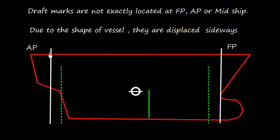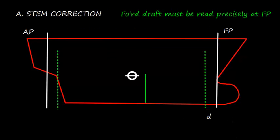Similarly, the aft perpendicular is also a reference line. The draft marks may not be located at the aft perpendicular but slightly displaced laterally. The midship marks are also not exactly at midship, so we need to apply corrections accordingly. The first correction is called stem correction, which needs to be applied to forward draft. Forward draft must be read precisely at the forward perpendicular.